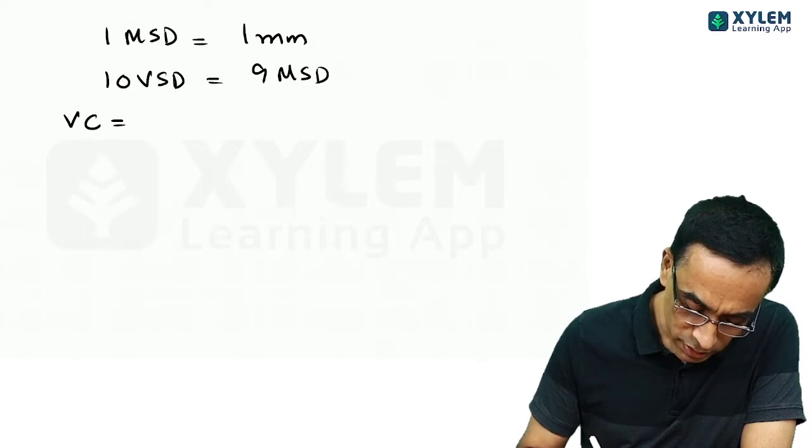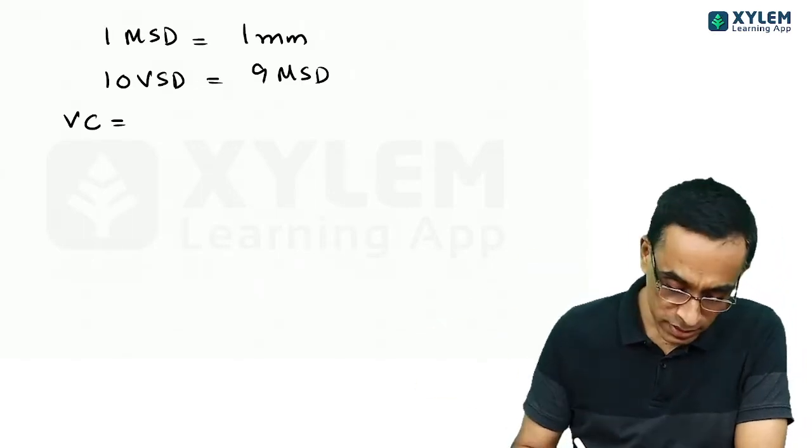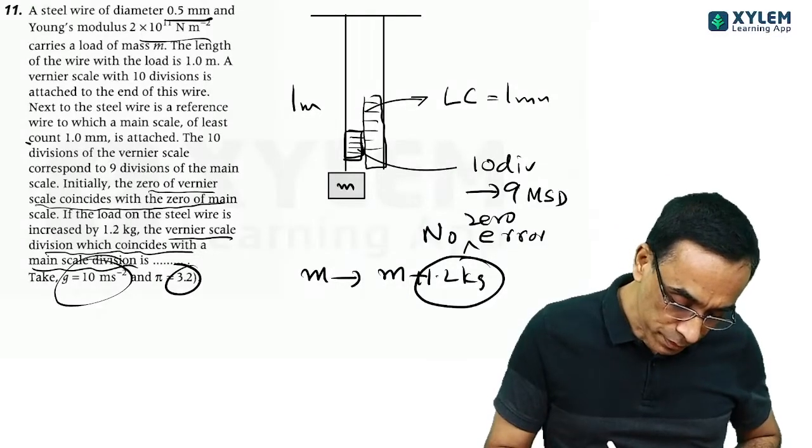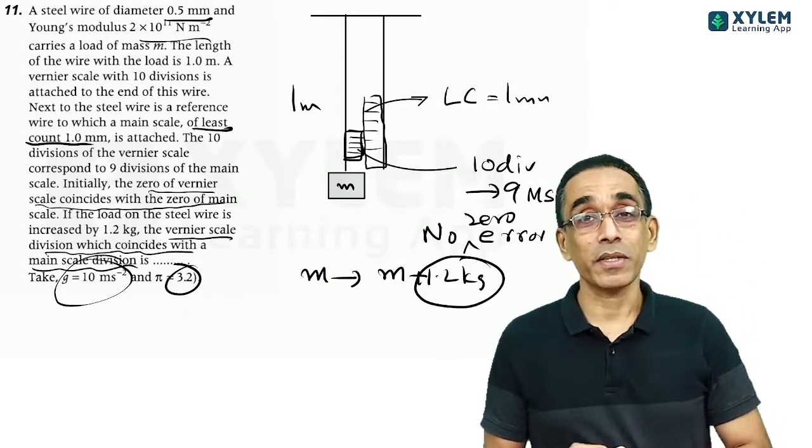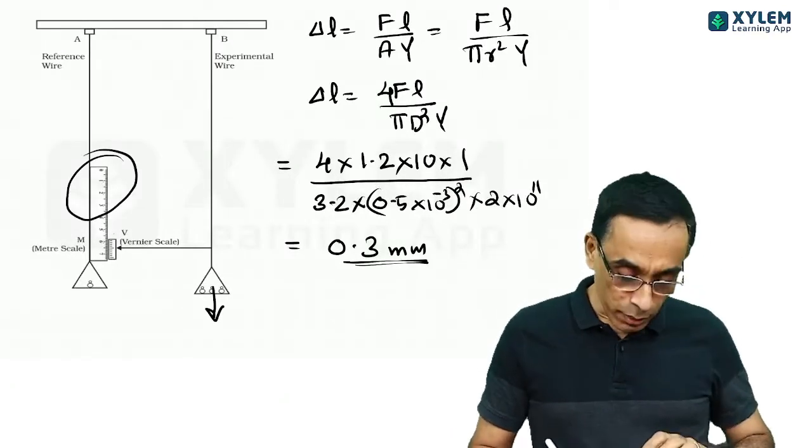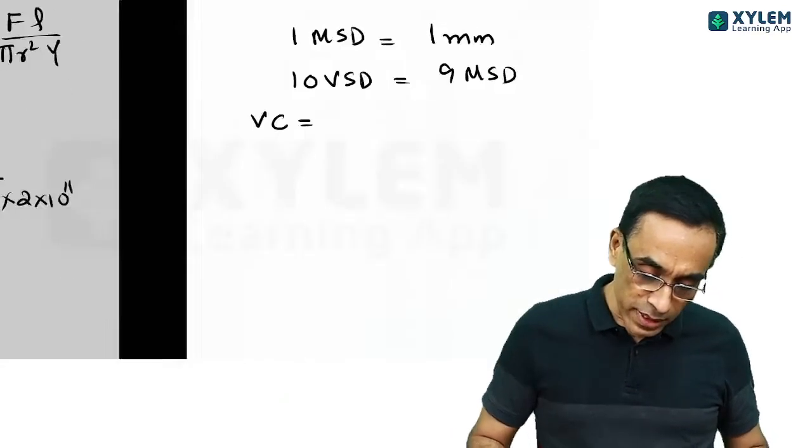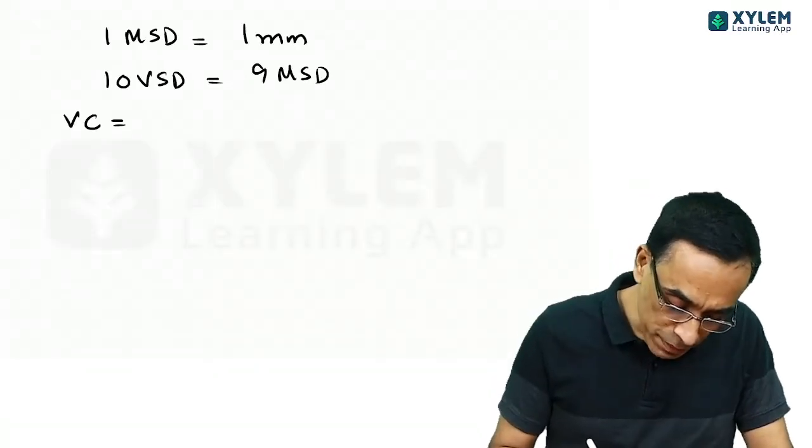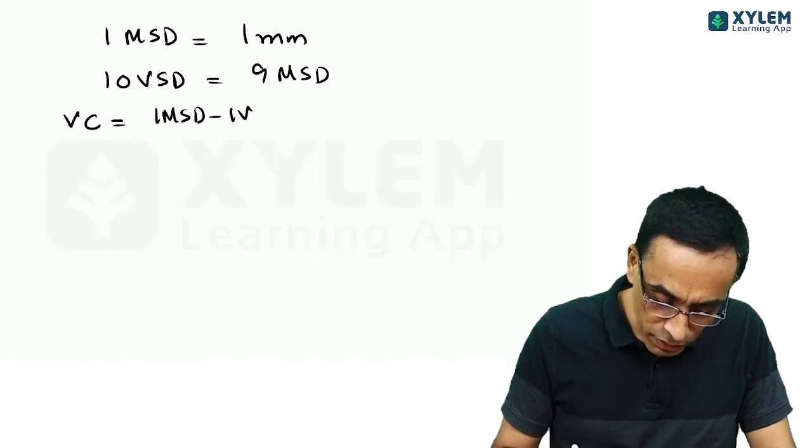This is the elongation in the wire. So this elongation should reflect in the reading in the vernier scale. Now let us go for the vernier scale. In the vernier scale, it is given that least count, one main scale division is given as 1 millimeter as per the question. More than that, it is given that 10 vernier scale divisions match with 9 main scale divisions.